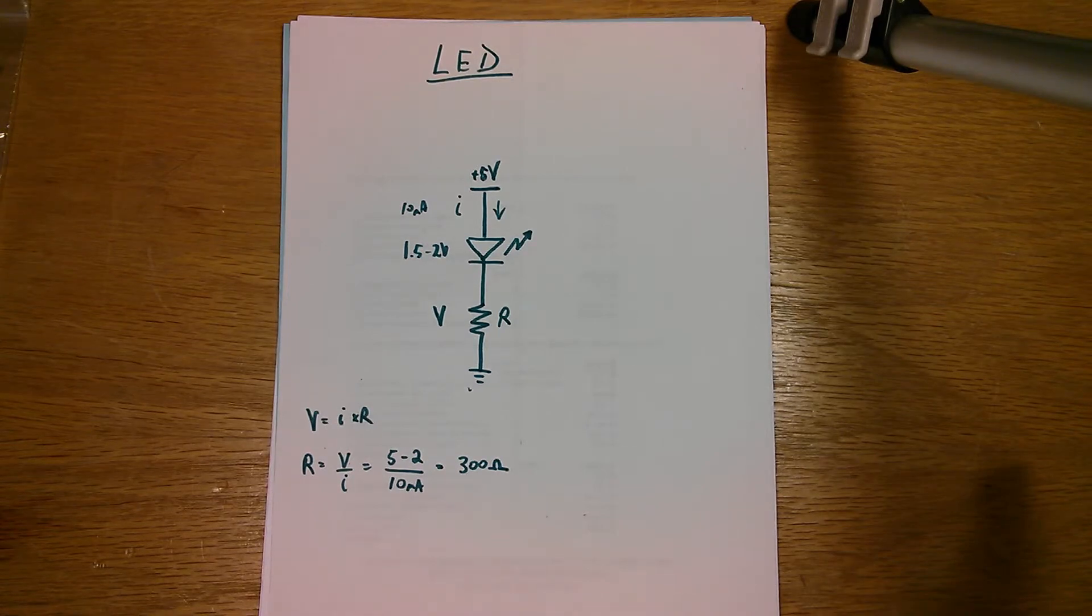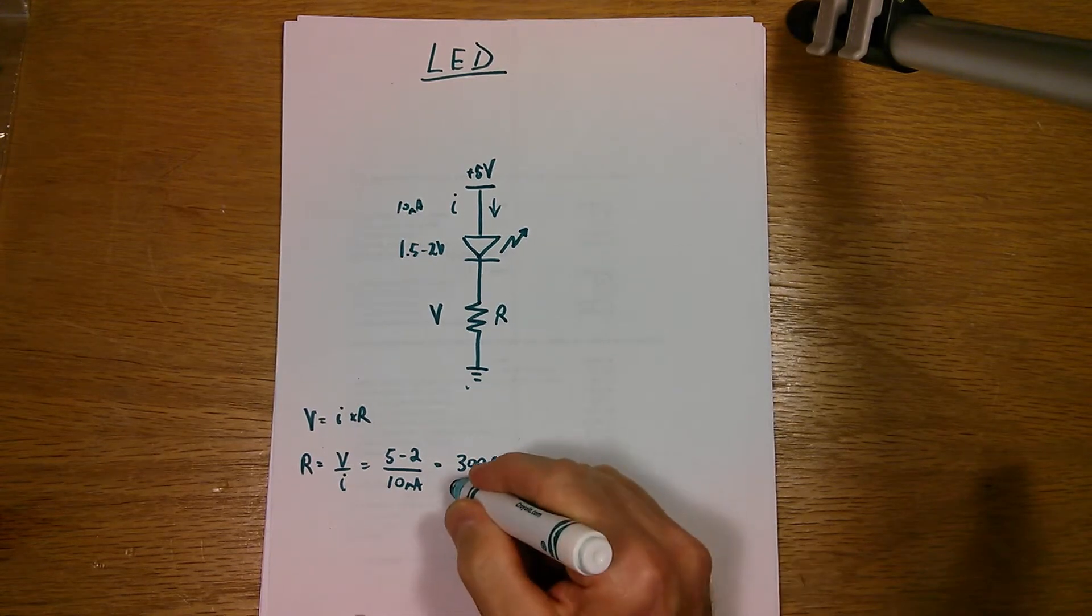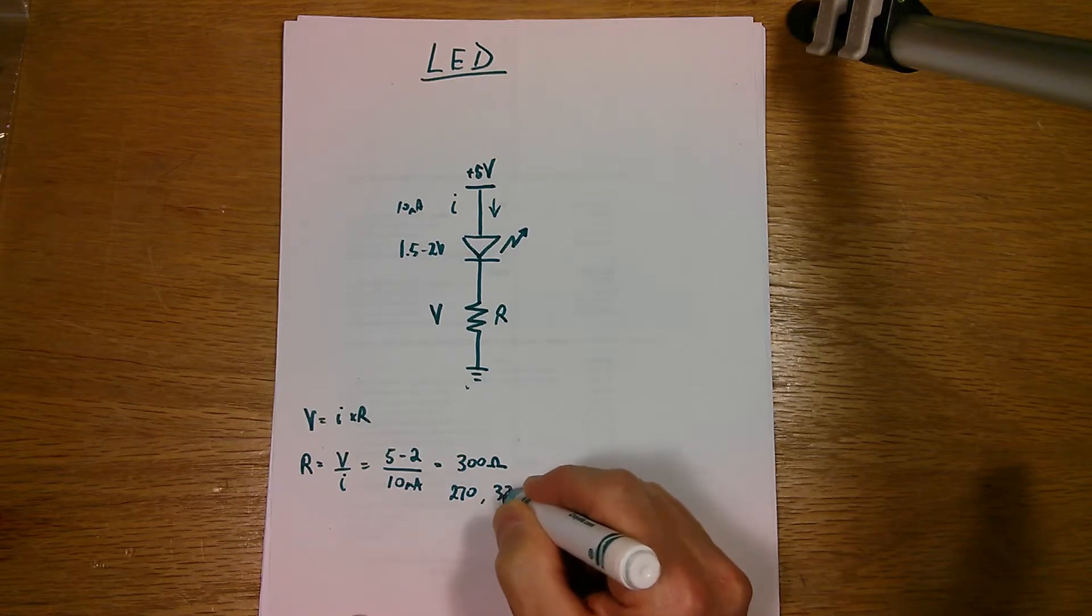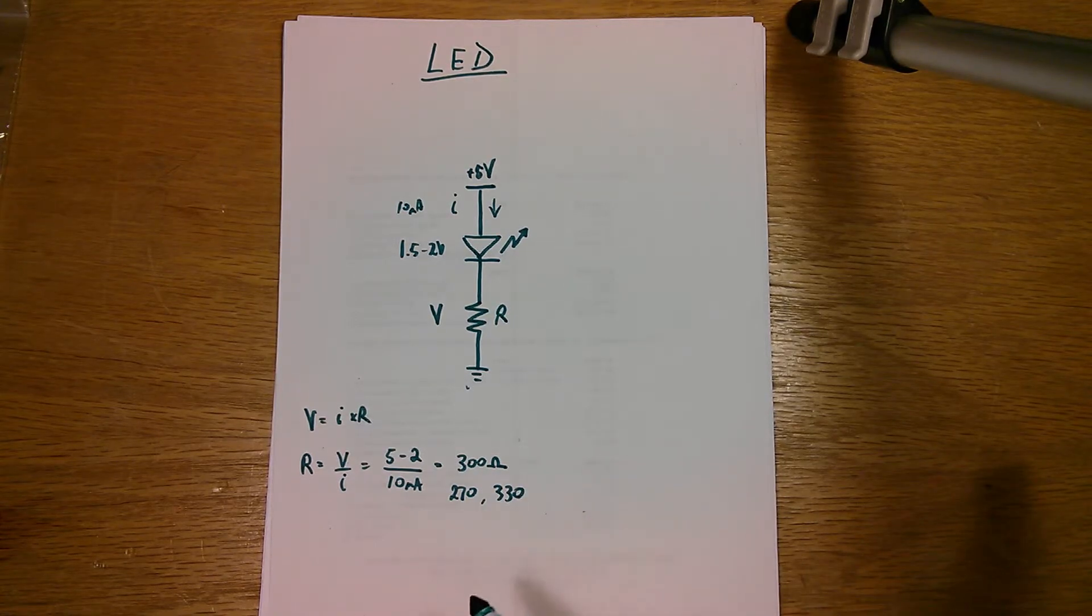The closest values around it are 270 ohms, 270 or 330 ohms. So those are the only two you can get.